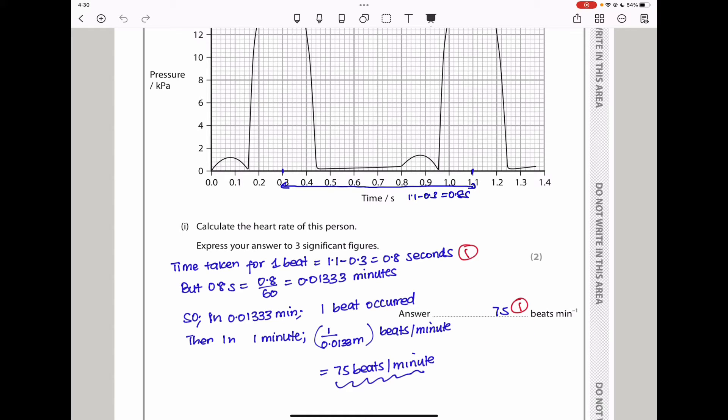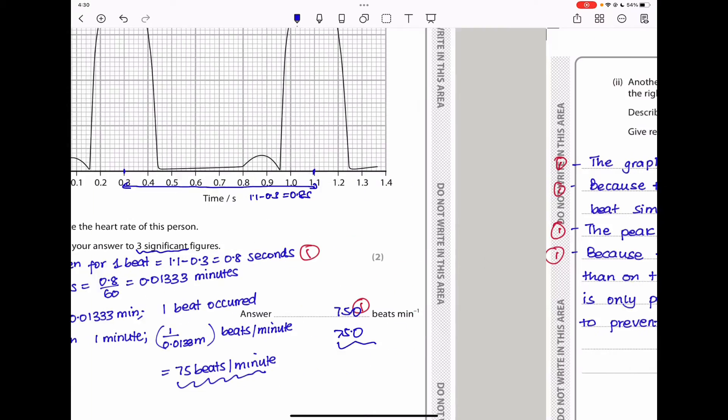Heart rate is calculated in beats per minute. So I need to convert the time, 0.8 seconds, to minutes. I divide by 60. So 0.8 divided by 60 gives 0.01333 minutes. This was one heartbeat in 0.0133 minutes. So I had to find how many beats are in one minute. In one minute, we're going to have 1 divided by 0.0133, which gives me 75 beats per minute. They wanted us to write this in three significant figures, so it could be 75.0 beats per minute.